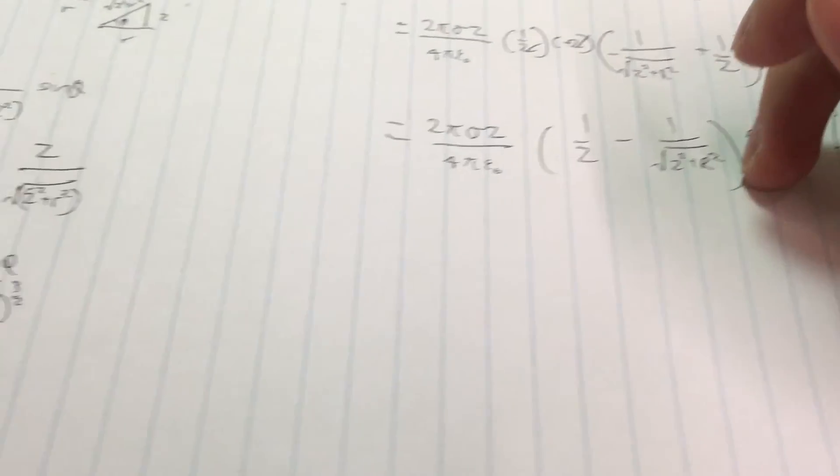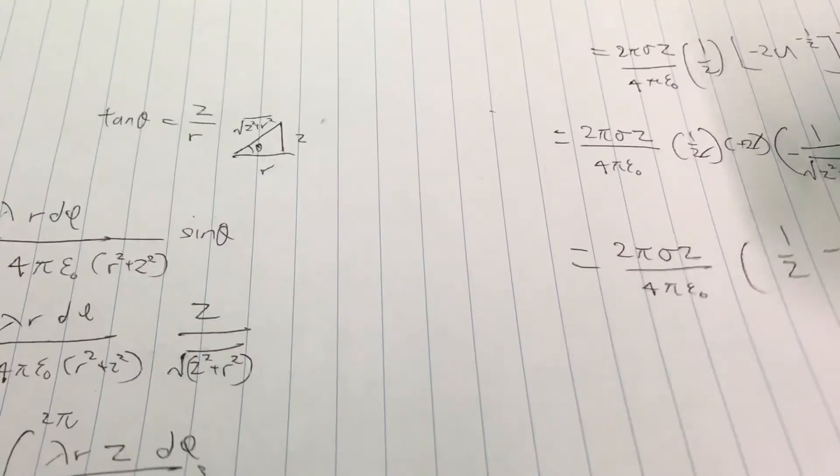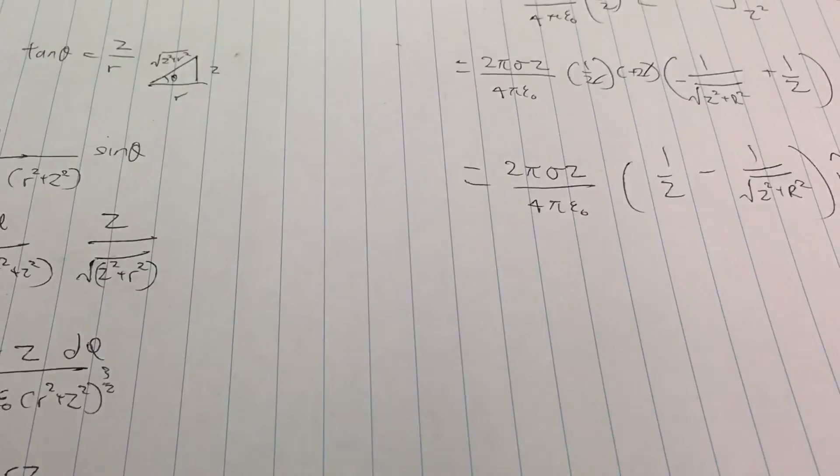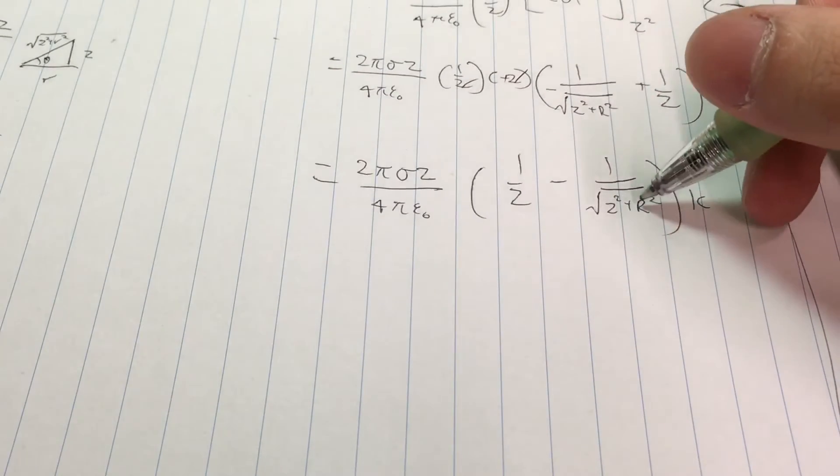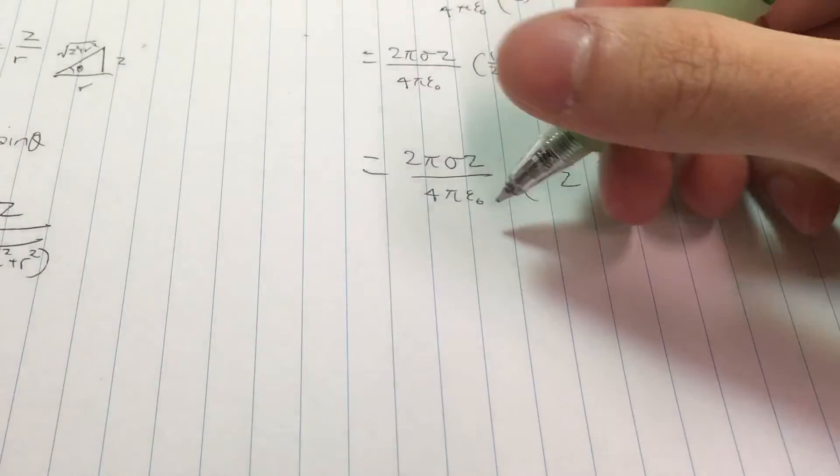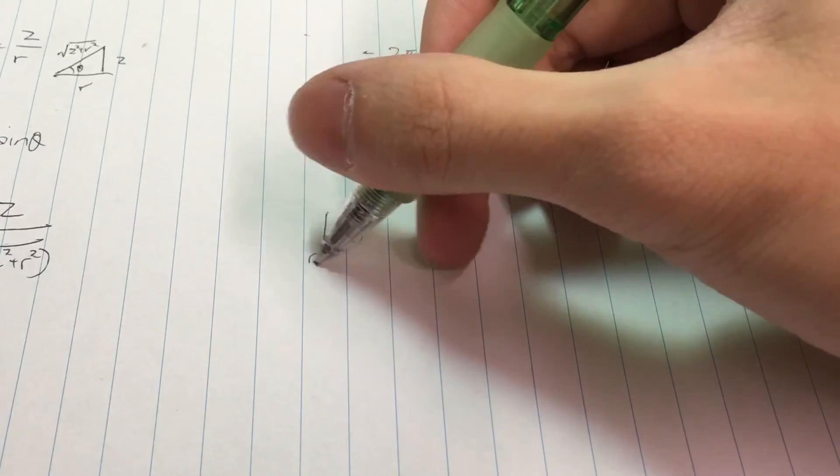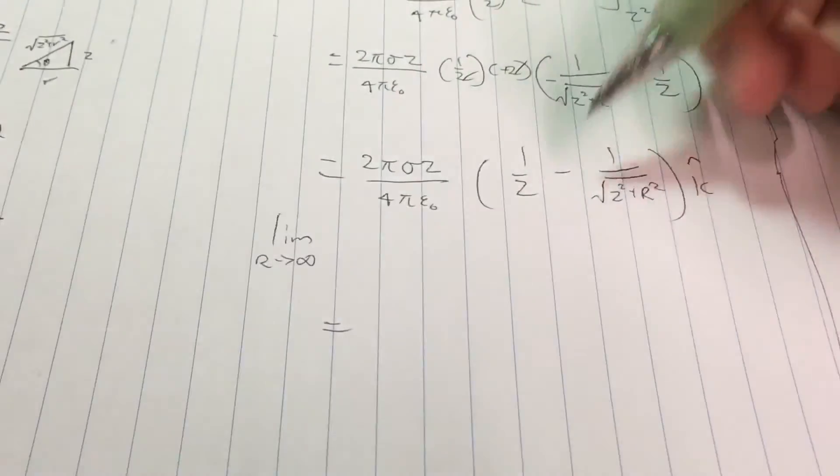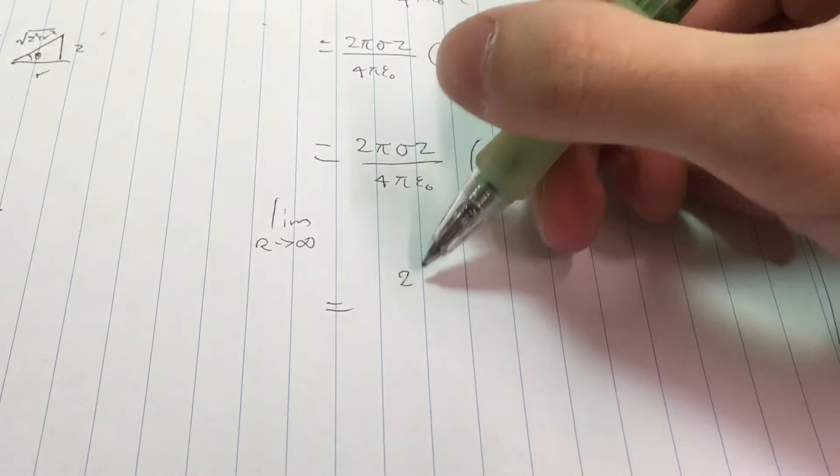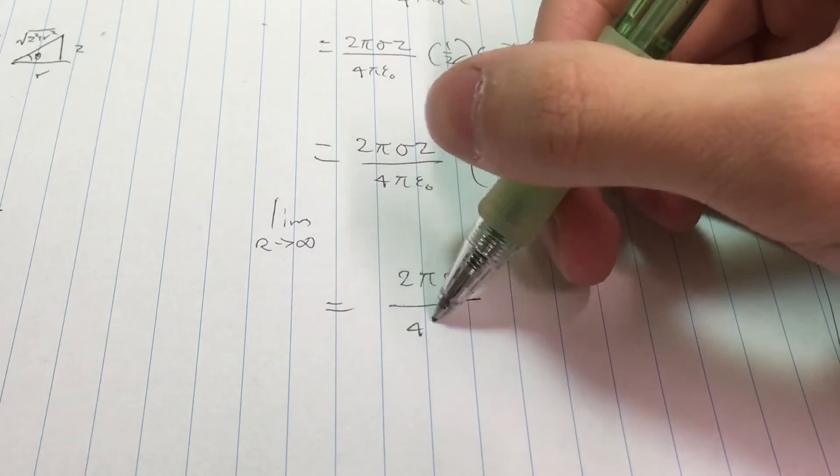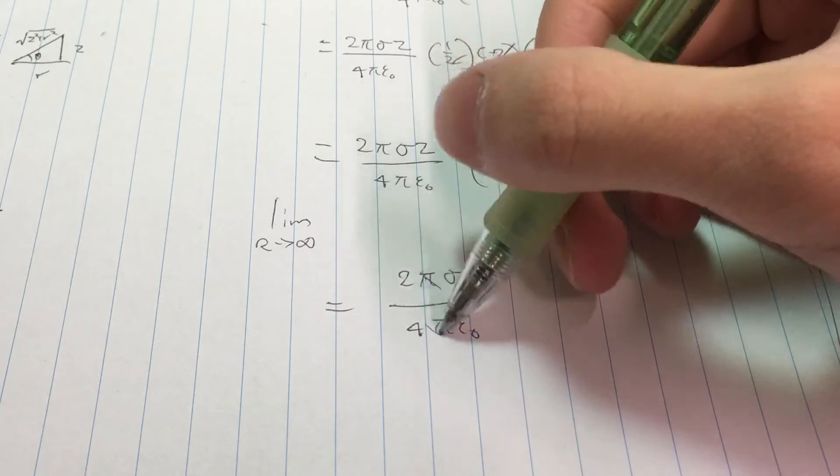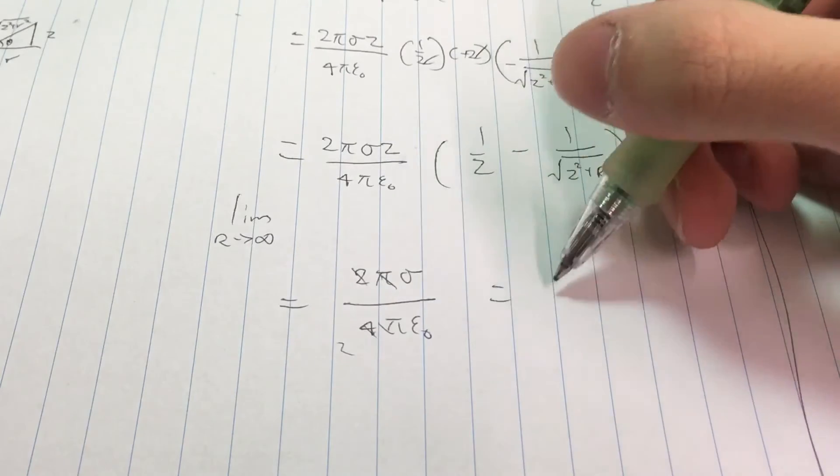We can consider a limit in the case where R extends to infinity. In that case, we'll have an infinitely large plate. When R extends to infinity, this whole thing is really just 0. So we're taking the limit when R goes to infinity. Then this goes to 0. We're left with this. These cancel out, and we're left with this.